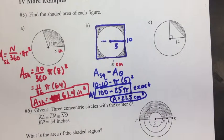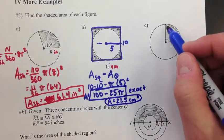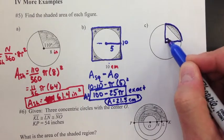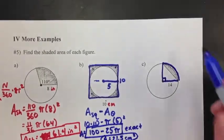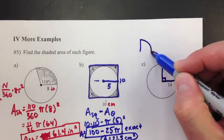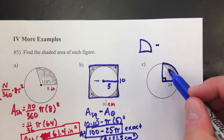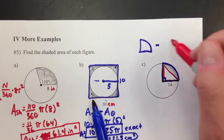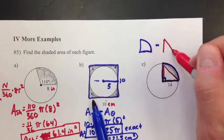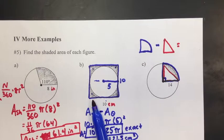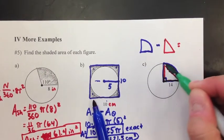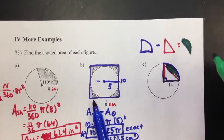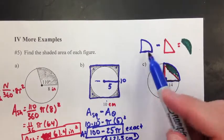So part C is going to be the same concept. Now C, here's the sector. This is what we've been looking at. If I could take that wedge and subtract out the triangle part, the triangle's not shaded, so I need to take that out. Minus the triangle, what I would be left with is my shaded area, which is this little kind of crescent shape right here.